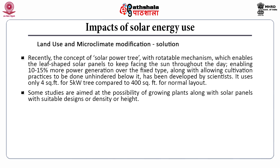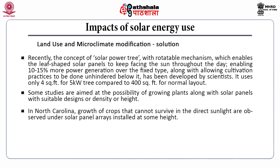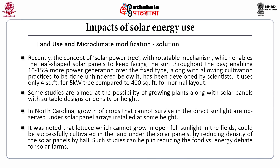The solar power tree uses only 4 square feet for a 5 kilowatt tree compared to 400 square feet for normal layout. Studies are aimed at growing plants alongside solar panels with suitable designs, density or height. In North Carolina, crops that cannot survive in direct sunlight, such as lettuce, are successfully cultivated in land under solar panel arrays installed at some height. Such studies help in reducing the food versus energy debate from solar farms.